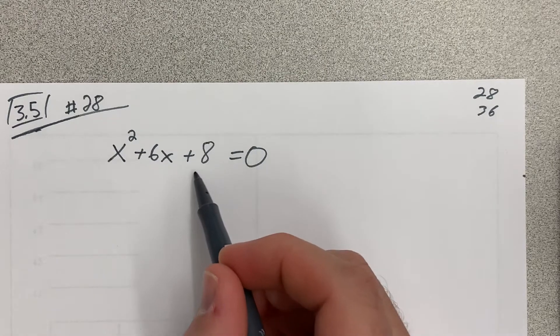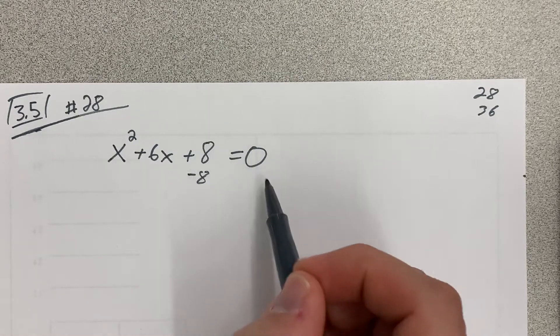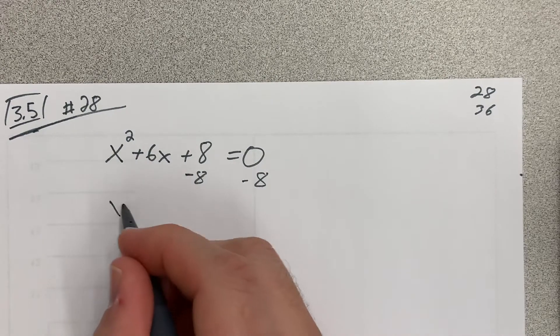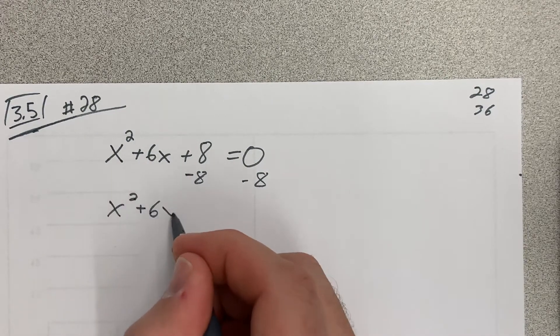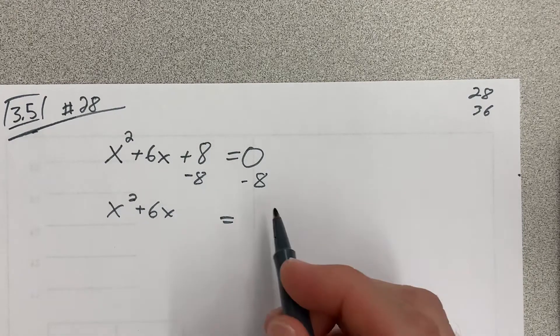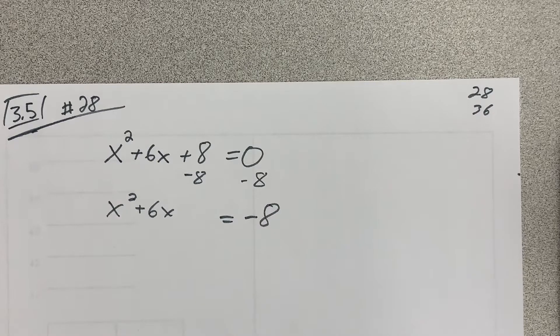So the first thing I usually do is I just kick this, whatever number is over here, the C I guess it would be, just kick it over to the right-hand side. Because all I'm really worried about is analyzing B to figure out how to make the left a perfect square. So I kick that over to the right.